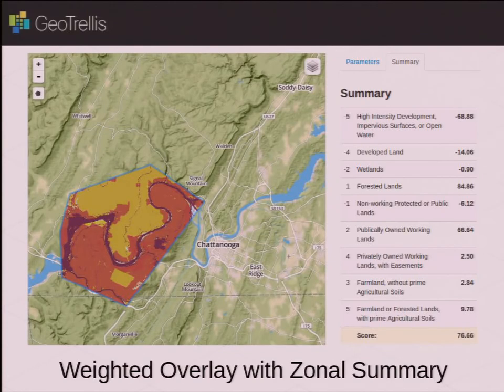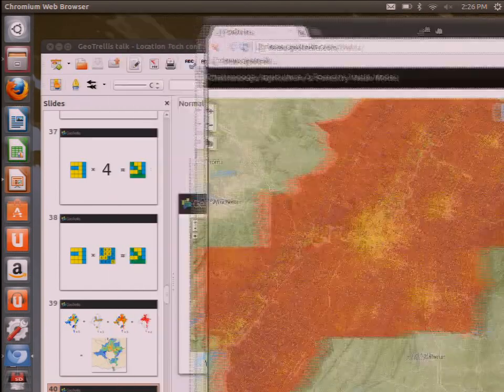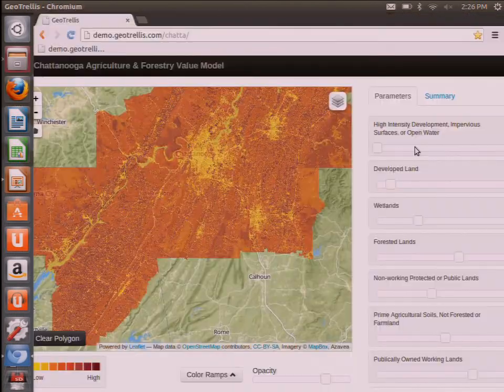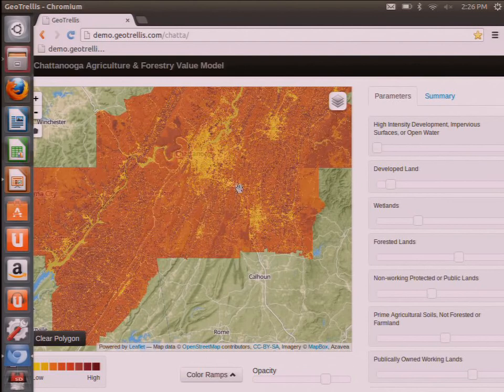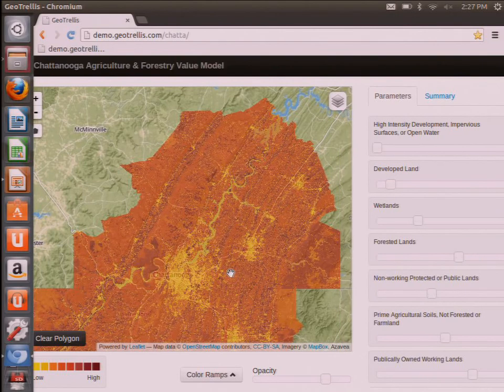So this can also be used in conjunction with other raster operations such as zonal summary. So I want to show you an application that was developed for the University of Chattanooga. Come on. You're going to get there. That does exactly this, zonal operation. Right, so this is, it's kind of a slow connection, so I promise it's actually faster than what you're about to see.